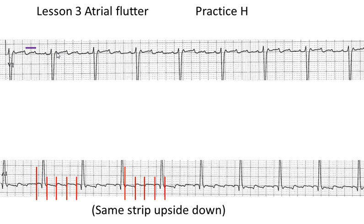If you look at this strip up here, we see regular occurring bumps which honestly look a lot like P waves. But if you look at the rate between these bumps, there's about six little boxes between, which would give us a rate of close to 250 beats per minute — absolutely impossible for a P wave to go through the AV node that fast.